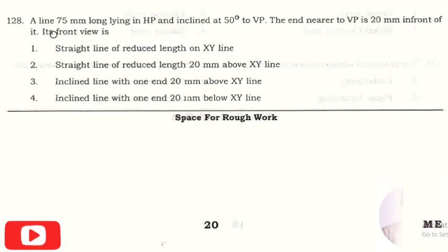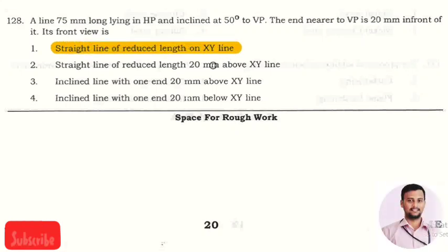The next question is: a line 75 mm long lying on HP and inclined at 50 degrees to VP. The end nearer to the VP is 20 mm in front of it. Its front view is? The right answer is option one, that is straight line of reduced length on XY.